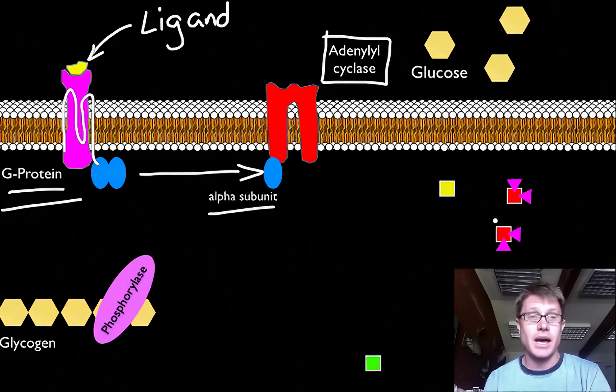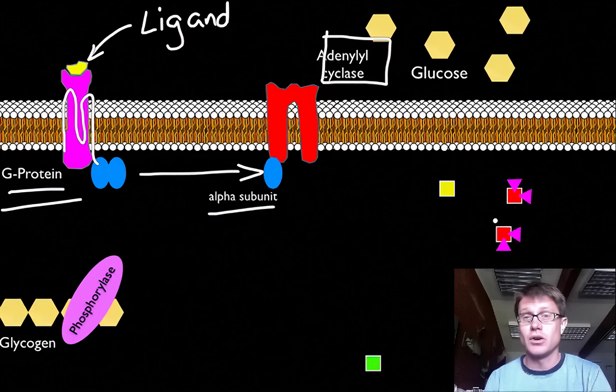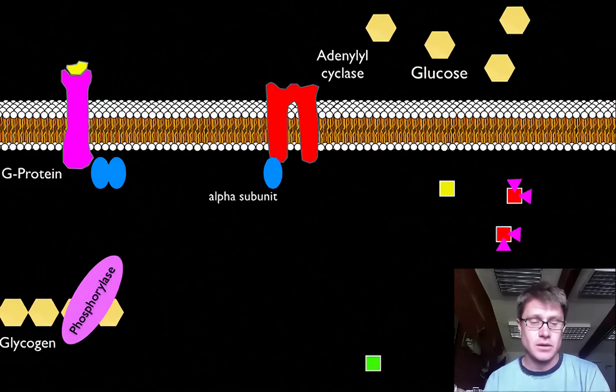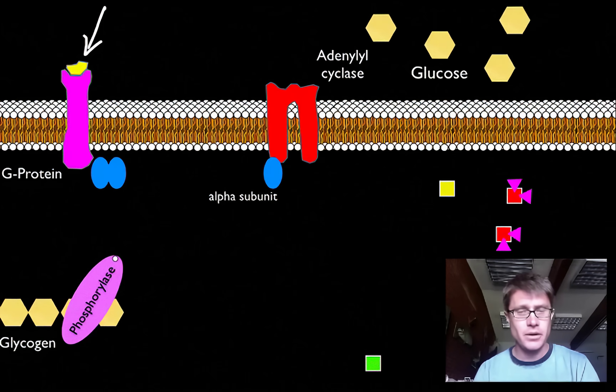Now once we don't have that ligand attached anymore, we don't make that cyclic AMP, then the whole thing is going to shut down again. And so the signal transduction pathway is simply a way that we can take this message and we can move it throughout the cell and then have desired consequences within the cell.